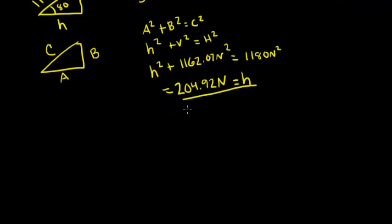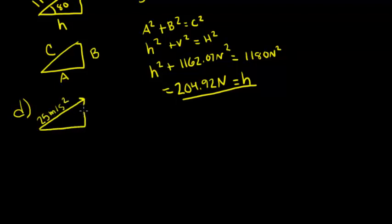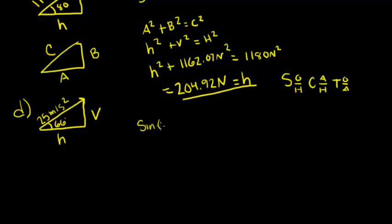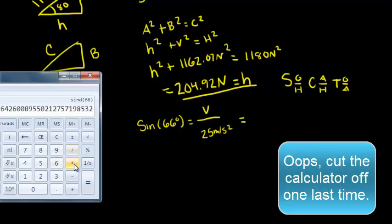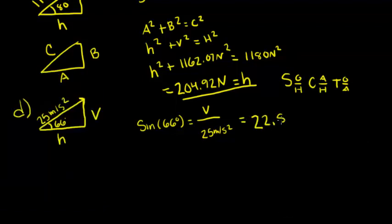Finally, let's move on to D. D states that there is a 25 meters per second squared acceleration at 66 degrees. We'll identify horizontal and vertical components. Let's do vertical first — we're looking for the opposite side and we know the hypotenuse, so we use sine. Sine of 66 degrees equals V over 25 meters per second squared. We plug this into our calculator and find 22.84 meters per second squared as our vertical.